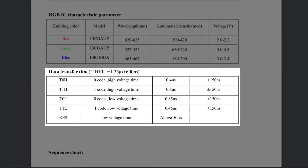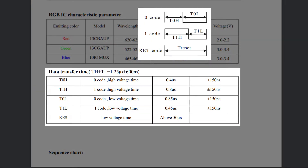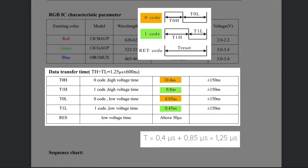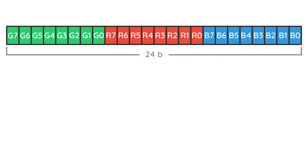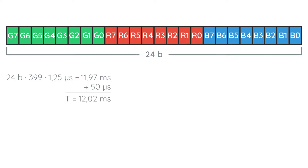Using the table with waveforms, we can determine this value. Each bit is encoded with a change of duty cycle, so-called PWM. The period of both 0 and 1 are equal and is 1.25 microseconds. Hence, the frequency or transmission speed is 800 kilobits per second. The data frame consists of 24 bits — 8 bits for each color channel. It takes 11.97 milliseconds to send 24 bits to each of the 399 LEDs. Adding 50 microseconds described in the datasheet as a reset gives 12.02 milliseconds. Hence, the display's refresh rate is around 83 Hz.